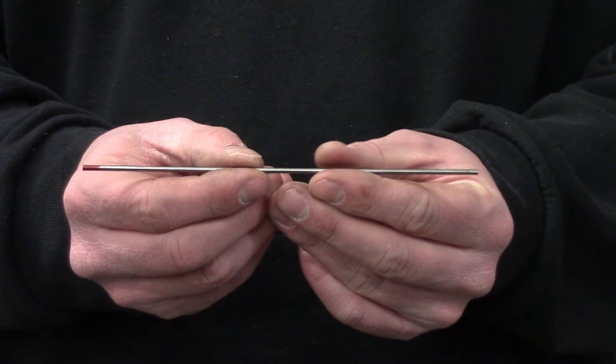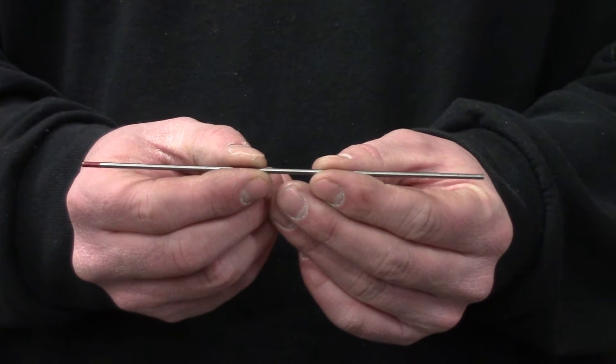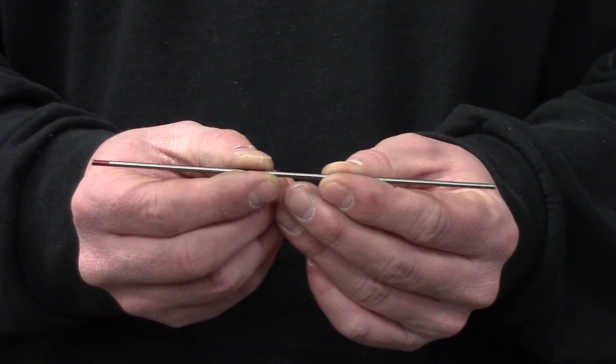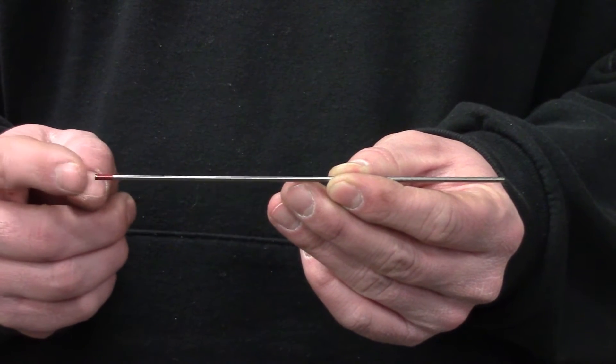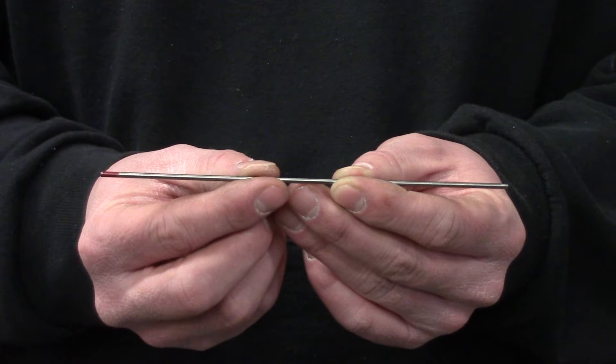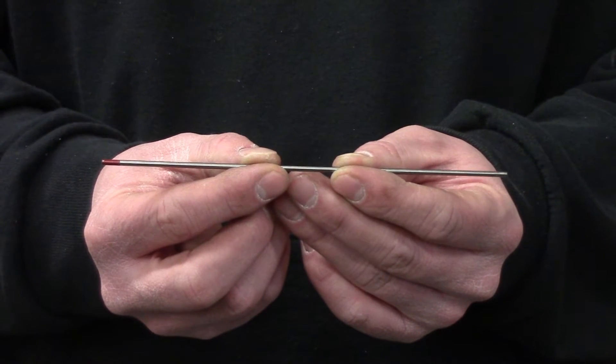All right, this is a brand new piece of tungsten and you can see it's just a cylinder with square cut ends. This red indicator here means that it's 2% thoriated tungsten.